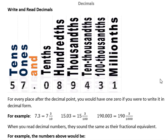When you read decimal numbers, they sound the same as their fractional equivalent. For example, 7.3 would be read as 'seven and three tenths' — the same as the fraction seven and three tenths. 15.03 is 'fifteen and three hundredths,' and 190.0003 is 'one hundred ninety and three thousandths' — the same way you would say it as a fraction.